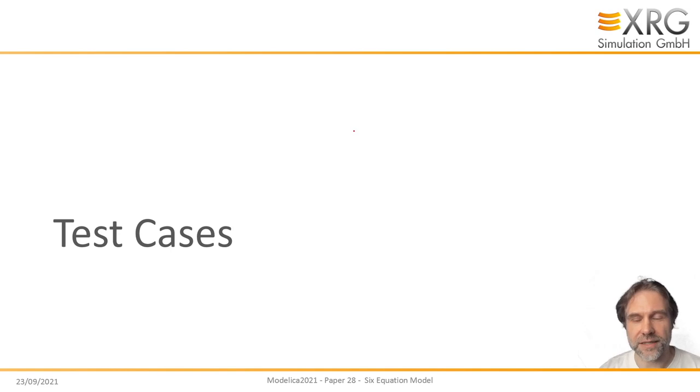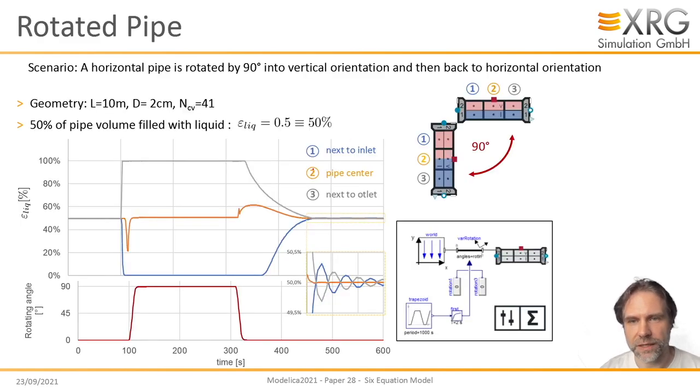Now let's take a look at the test cases. How does the model really behave? Here's one simple tester that we saw at the beginning. That's the horizontal pipe. It's filled half with liquid and water. Then this pipe is turned by 90 degrees down. So you would expect the liquid should go down and the vapor should go up. That's precisely what we see here. Close to the inlet, you see we have 50 percent liquid and the liquid fraction goes down to zero percent close to the outlet. Close to the outlet, we start from 50 percent and go up to 100 percent. In the center, we stay with 50 percent, simply because we have chosen an odd number of control volumes.